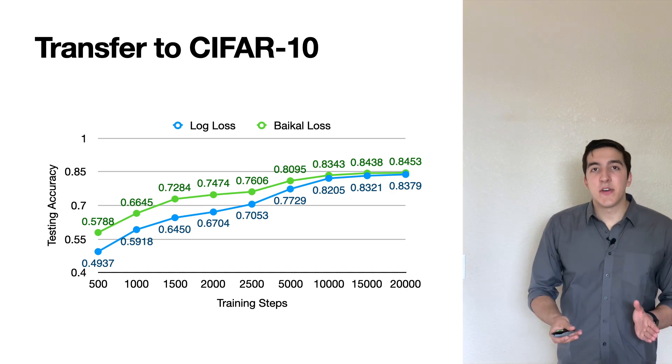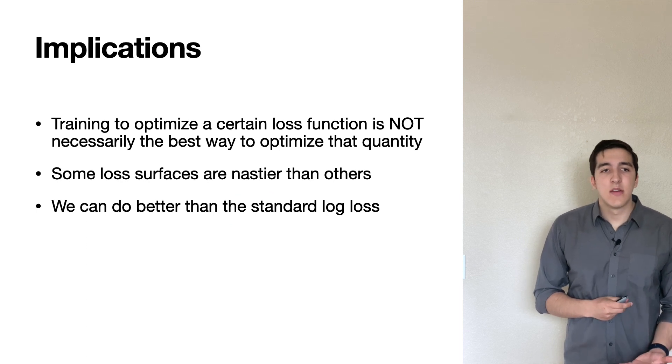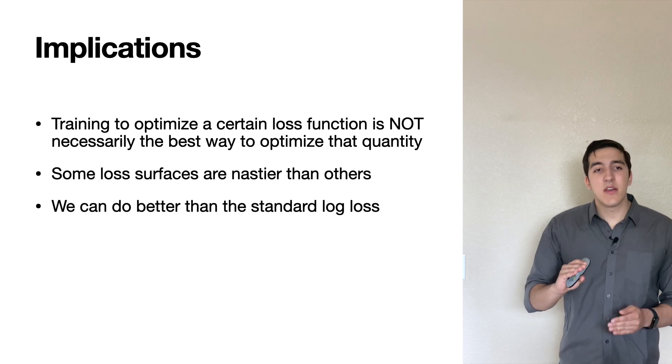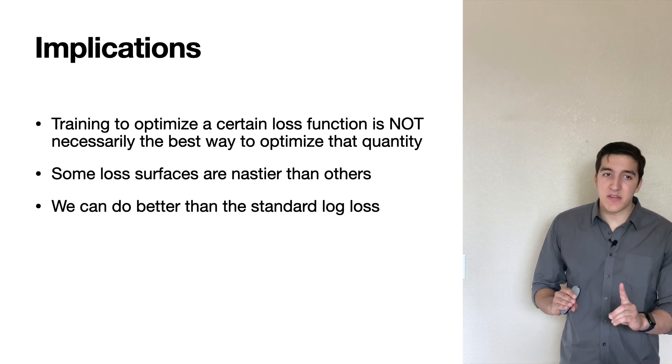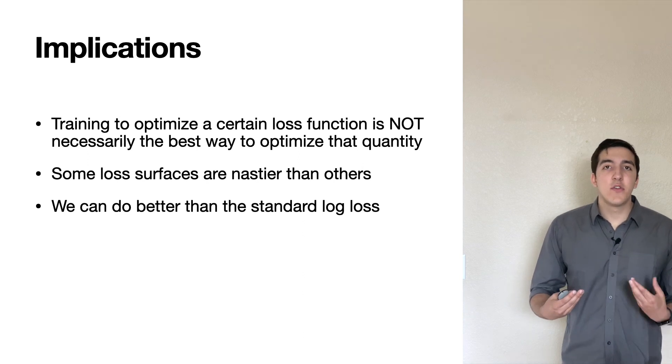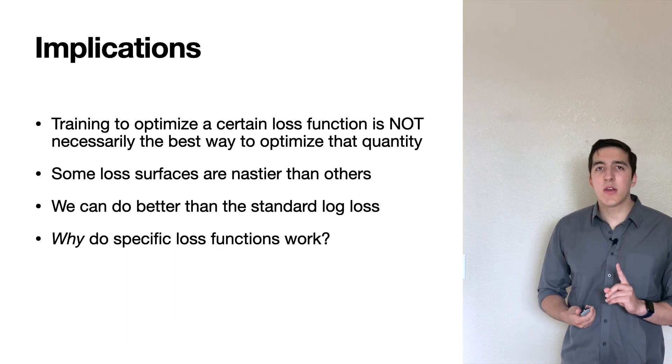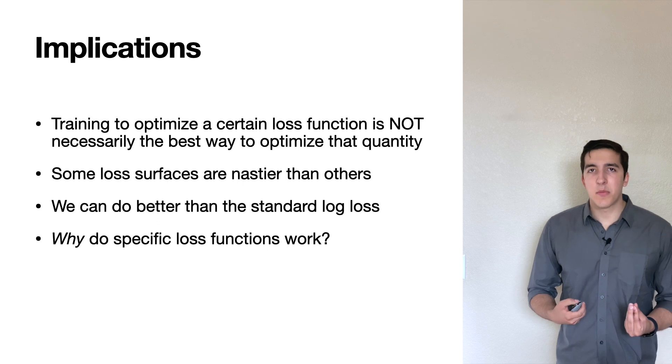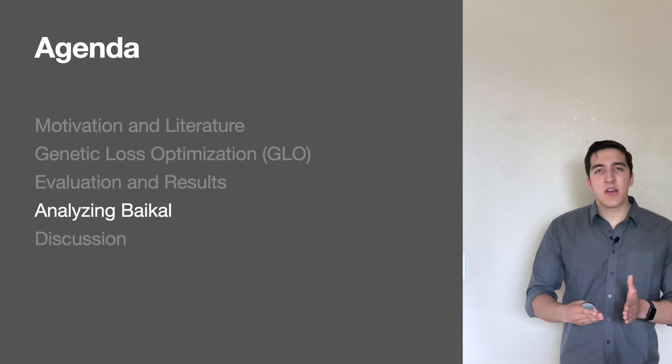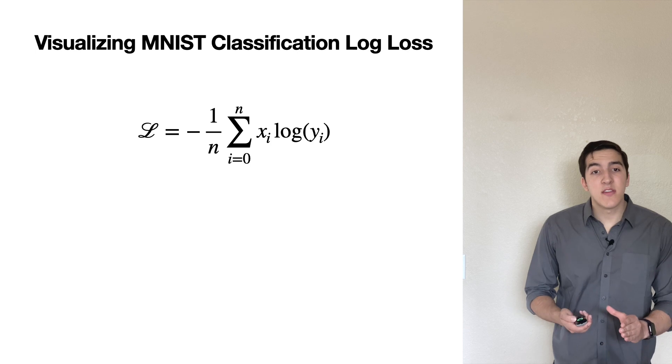What are some of the implications of these results? We find that training to optimize a certain loss function is not necessarily the best way to optimize that specific quantity. Certain loss surfaces are nastier than others, and this allows us to do better than the standard cross-entropy log loss. But there's still a big remaining question. Why do some of these loss functions work better? And for that, we're going to take a little bit of a deep dive into the Baikal loss function.